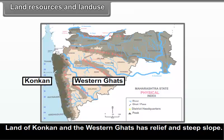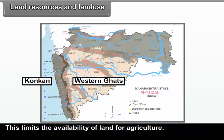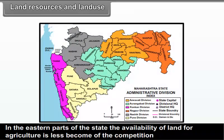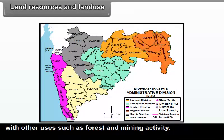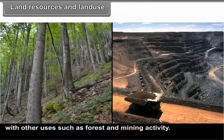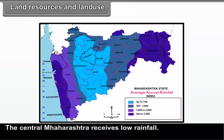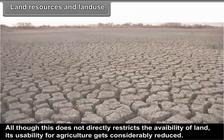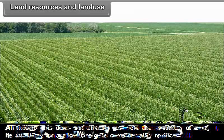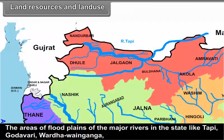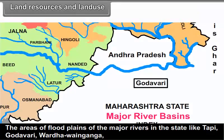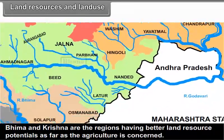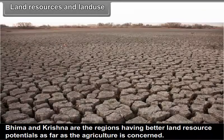Land of Konkan and the Western Ghats has high relief and steep slope, limiting availability of land for agriculture. In the eastern parts of the state, availability of land for agriculture is less due to competition with forest and mining activity. Central Maharashtra receives low rainfall, which considerably reduces the usability of land for agriculture. The areas of floodplains of major rivers — Tapi, Godavari, Wardha, Ganga, Bhima and Krishna — have better land resource potential for agriculture.